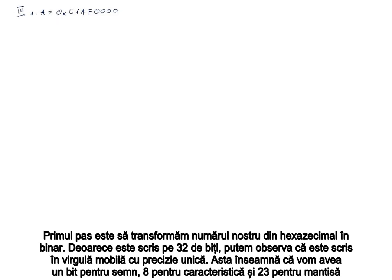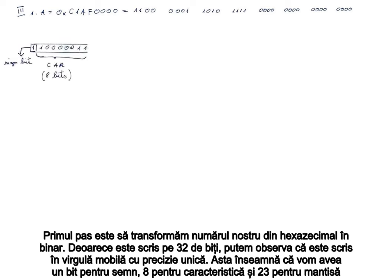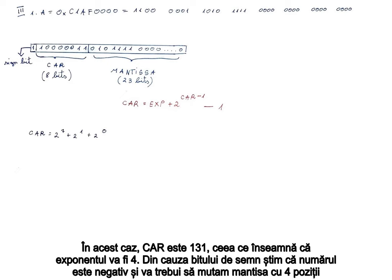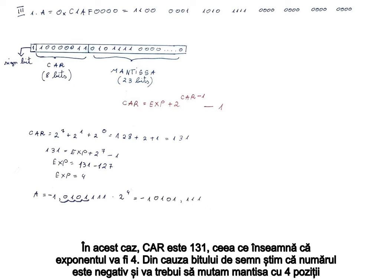The first step is to transform our number from hexadecimal to binary. Because it is written on 32 bits, we can observe that it is written in floating point single precision. That means we will have 1 bit for sign, 8 for the characteristic, and 23 for the mantissa. We know that the characteristic is equal to the exponent plus 2 to the power of maximum characteristic bits minus 1, and everything minus 1. In this case, our characteristic is 131, which means our exponent will be 4. Because of the sign bit, we know that the number is negative, and we're going to shift the mantissa by 4 positions.